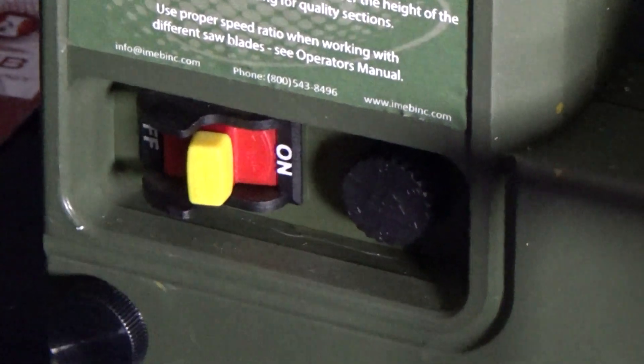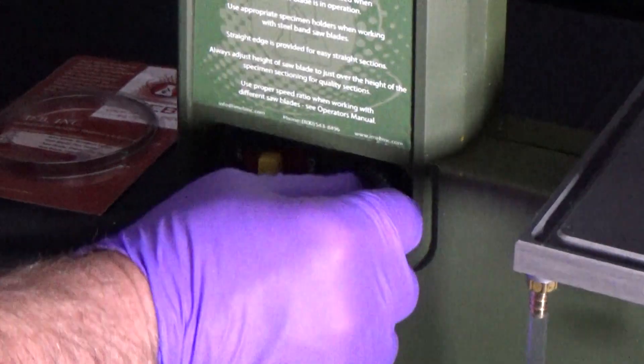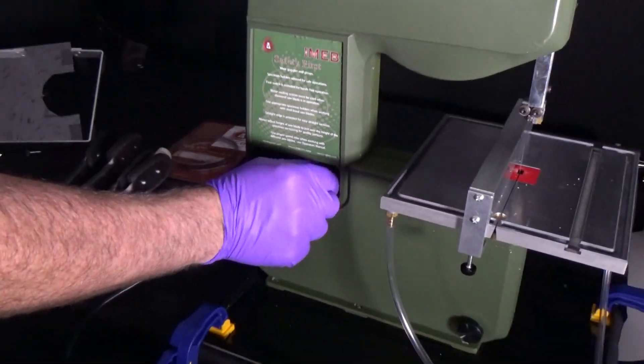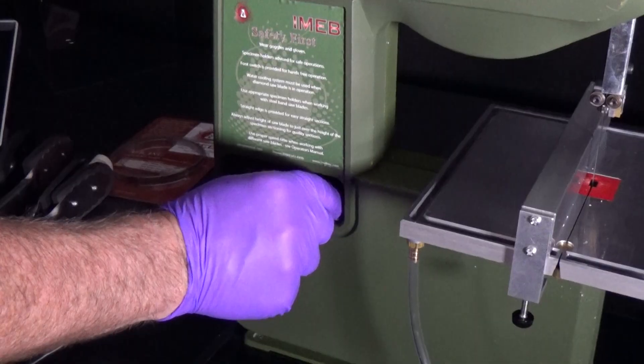To operate the bone bandsaw, flip the switch on. To control the speed, you can turn the knob higher or lower. The foot pedal that comes with the bone bandsaw can be used for hands-free operation.